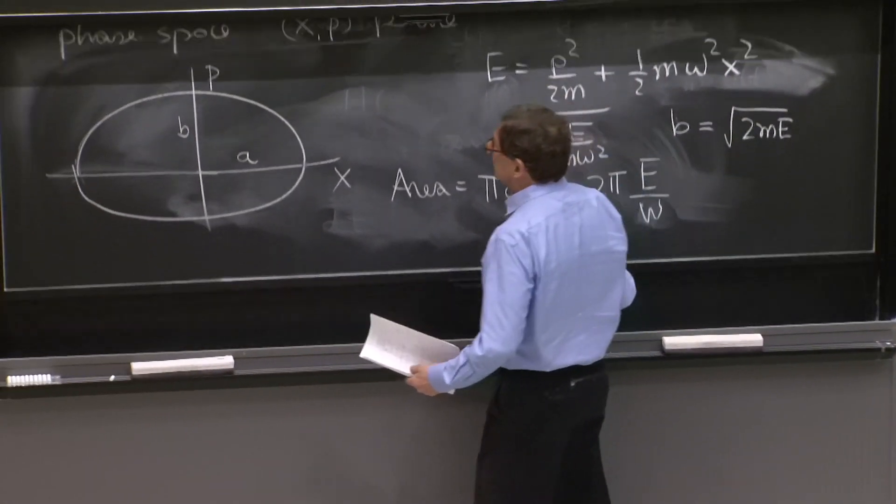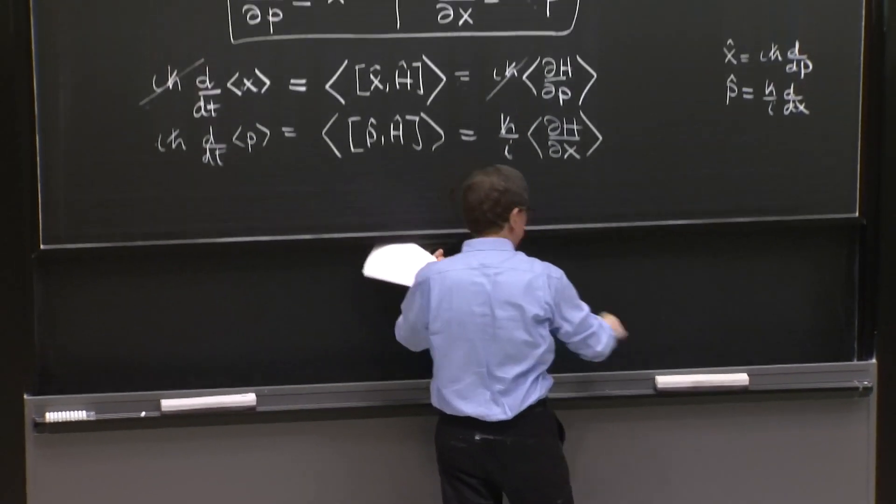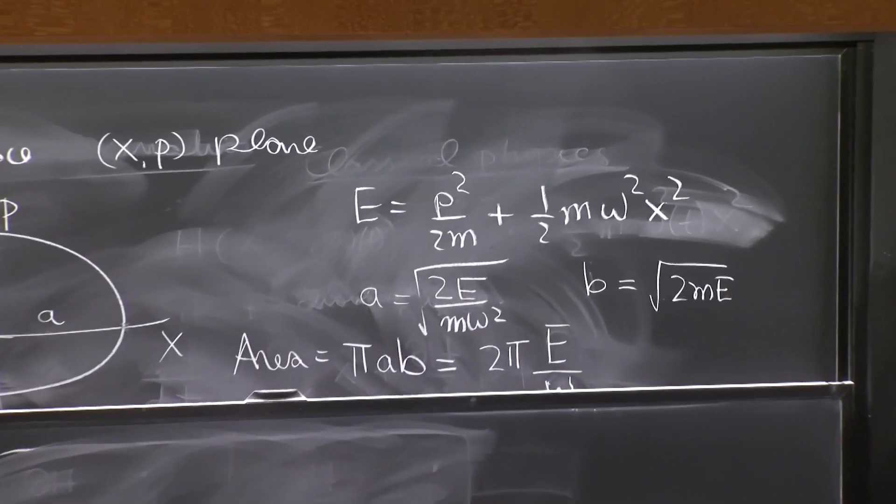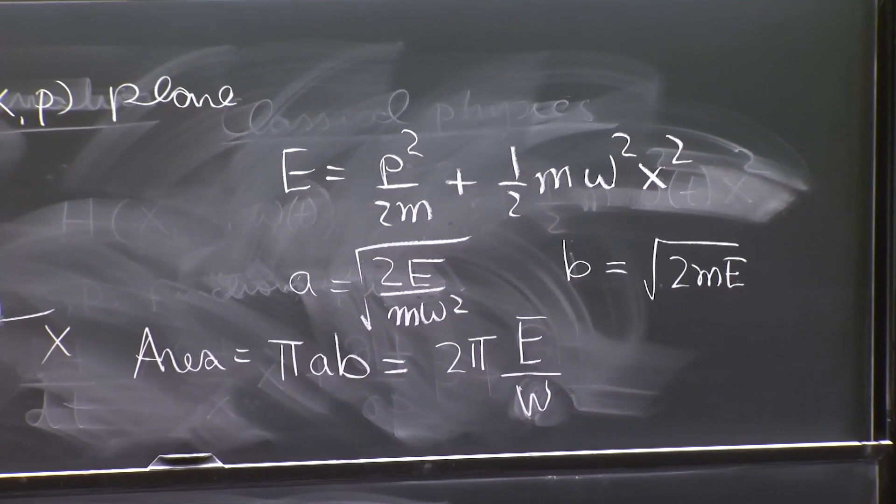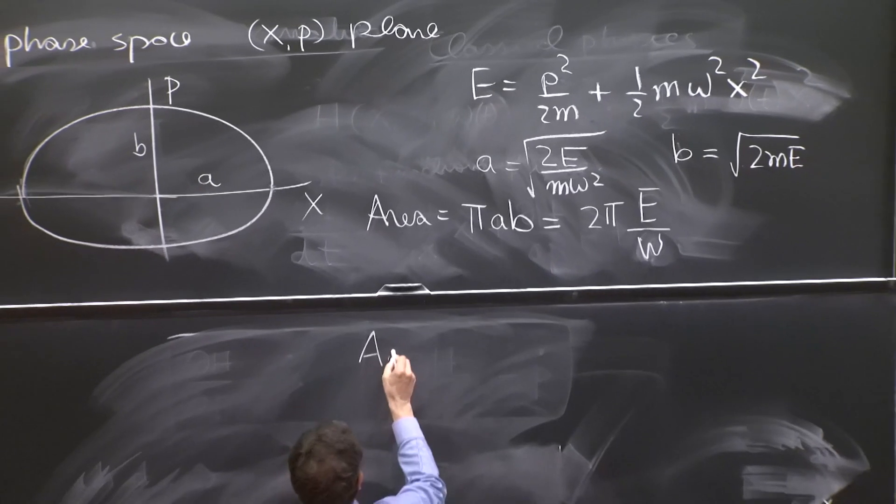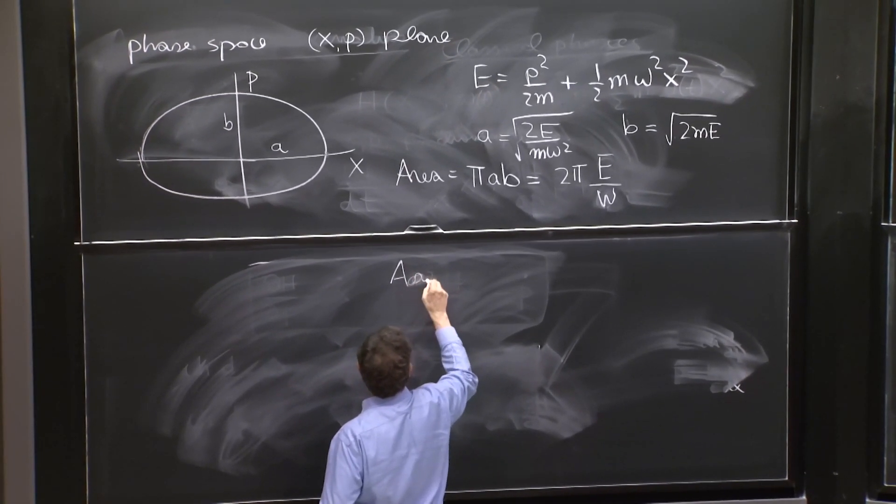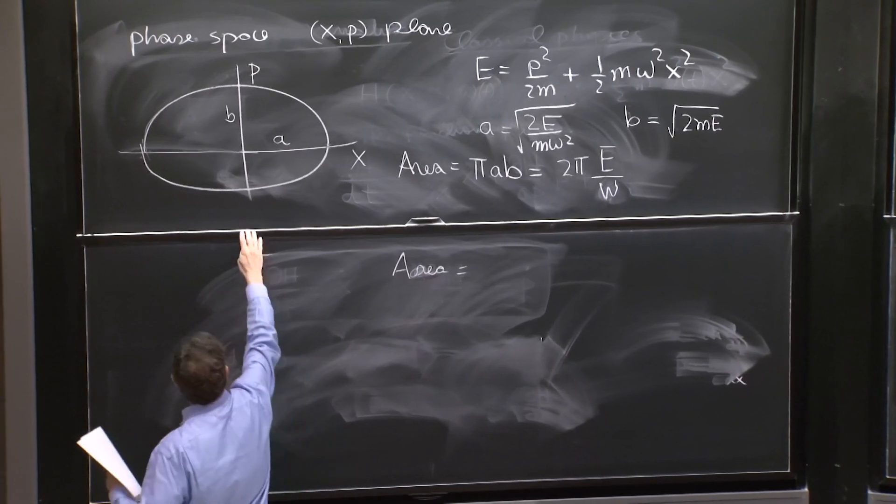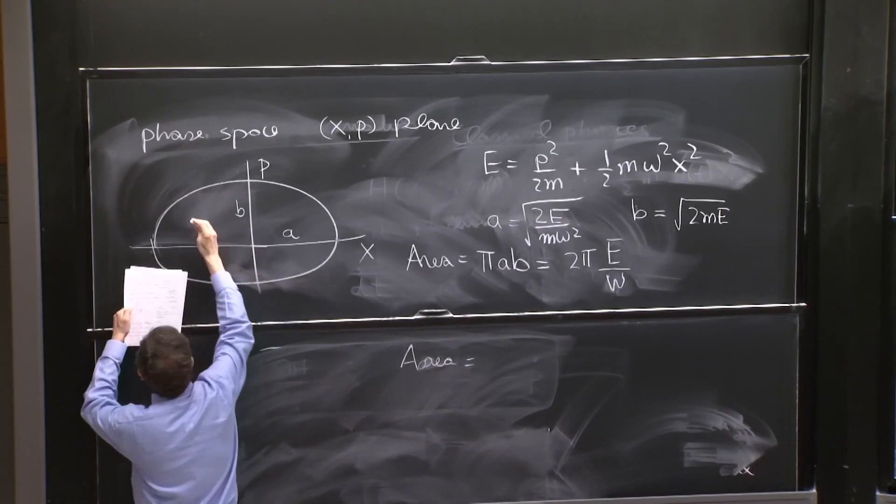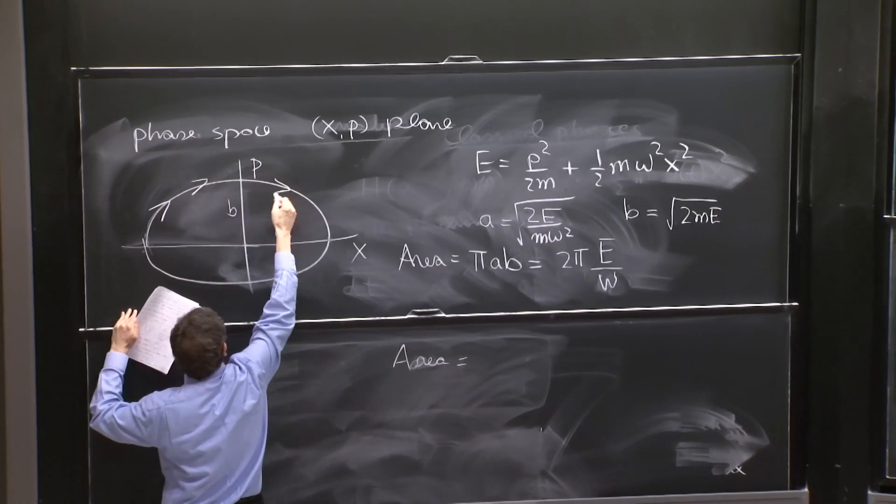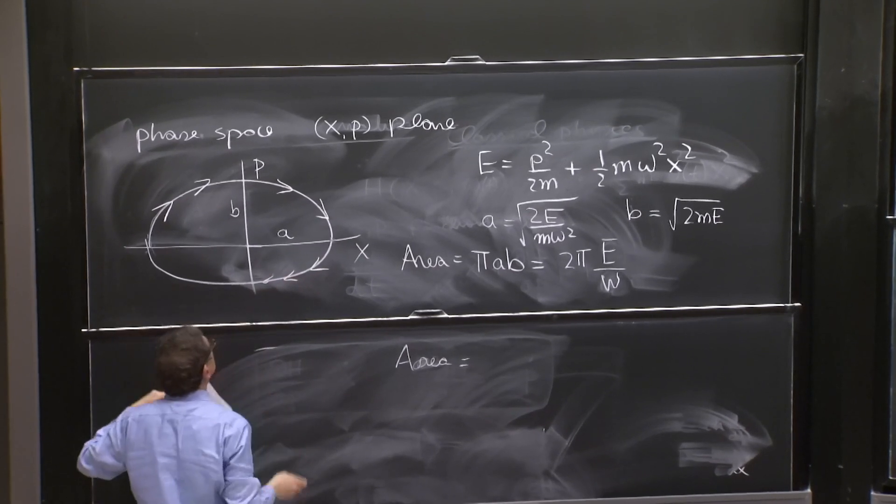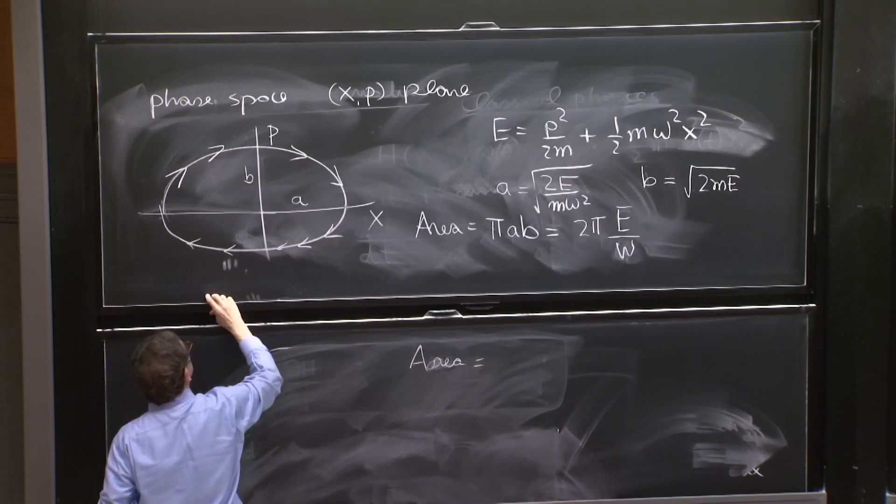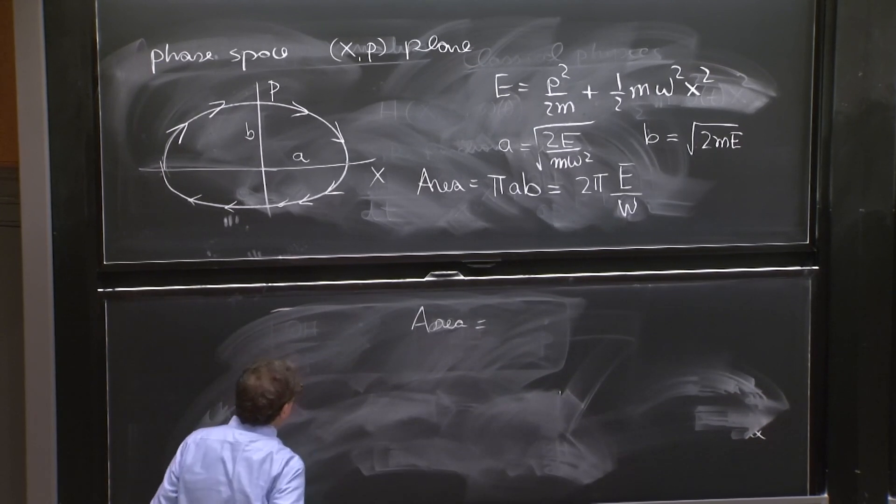It also can be written as a formula, which is kind of neat. So the area of the ellipse is this. But the area of the ellipse can also be written in a slightly different way. Let's assume the orbit is going like this, for example. The motion is going like that.